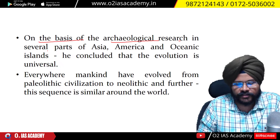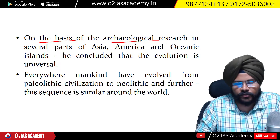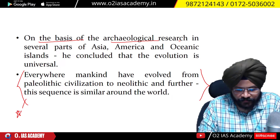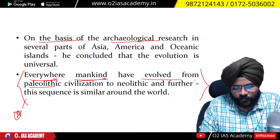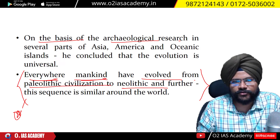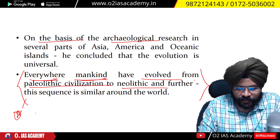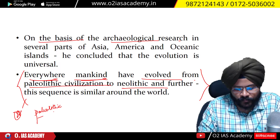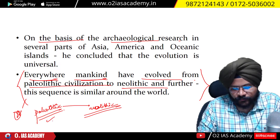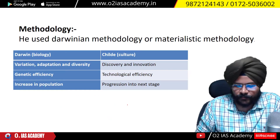On the basis of archaeological research across several parts — Asia, America, oceanic islands — he found a universal theme of evolution. He said, and this is the crux: everywhere, mankind has evolved from the Paleolithic civilization to the Neolithic civilization. This is the crux of universal evolutionism — mankind went from Paleolithic to Neolithic everywhere.